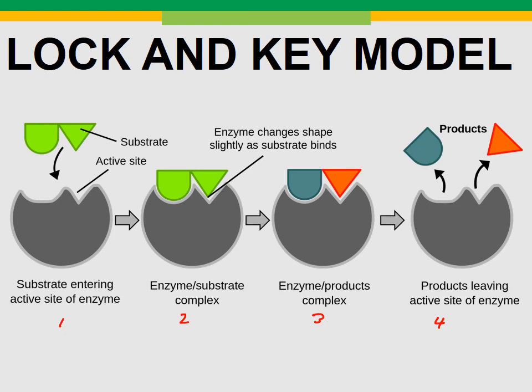Enzymes are pretty much a permanent feature of your body unless we do something to break them down. pH swings, temperature swings, and concentration swings can really affect enzyme activity. If we destroy the protein — and thus the enzyme — through temperature or pH, they will not recover. That's pretty much everything for enzymes, catalysts, and chemical reactions. If you have any questions, let me know in class, and have a great day.